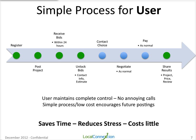It's a simple process for the user. If you're a customer looking for work, you register, post a project within minutes, and start receiving bids. Our goal is to make sure they receive bids within 24 hours. They unlock the bids by paying a $5 one-time fee to unlock all bids for that project. Now they can see the contact info of every company that's bid, and they can start communicating via the private message board. They can then contact the service providers of their choice and negotiate with them.